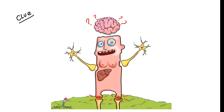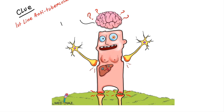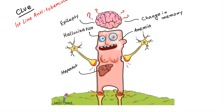I will give you some hints and then you have to guess the drug. Here you can see I have drawn a unique picture. The first clue is that the drug is a first-line anti-tubercular drug. This picture is depicting some important side effects of this drug, which are epilepsy, change in memory, hallucination, and anemia, hepatotoxicity.